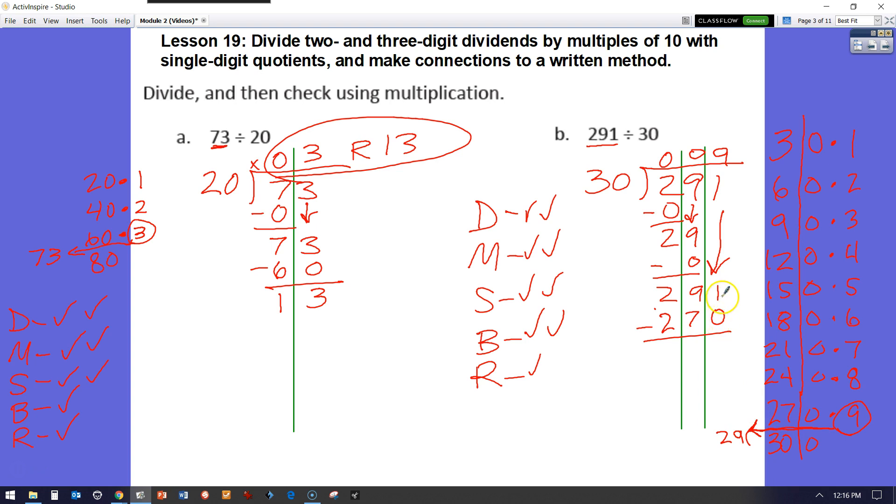So I'll do my subtraction. 1 minus 0, 9 minus 7. And that is my answer. I have a final answer of 9 and a remainder of 21.